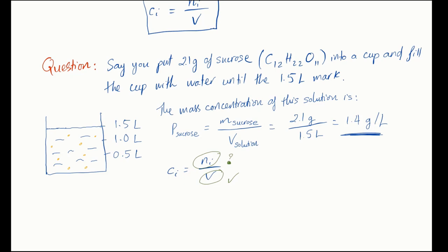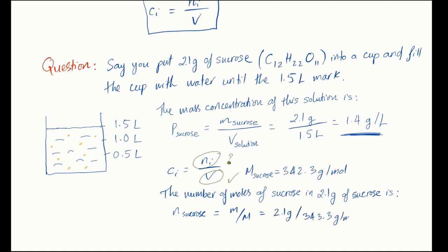First, you will need the molar mass of sucrose, which is 342.3 grams per mole. Now the number of moles of sugar in 2.1 grams of sucrose is 6.1 times 10 to the minus 3 moles.